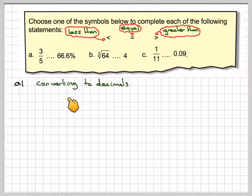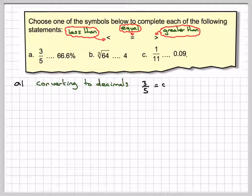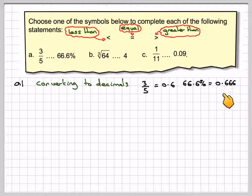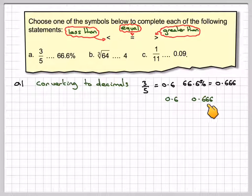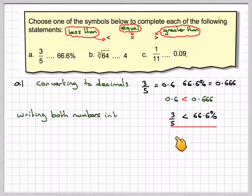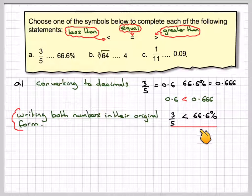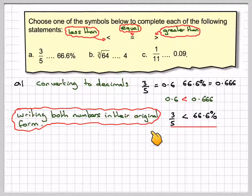If you convert both numbers to decimals, which is quite easy to do on your calculator, do 3 divided by 5 and you get 0.6, and 66 divided by 100, because this is a percentage, is 0.666. If we now write them down, we've got 0.6 and 0.66. This number here is less than this number here, so we're going to put this symbol in. We need to write out the final answer in terms of the original statement, so 3/5 is less than 66.6%.